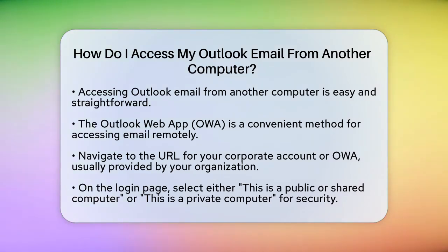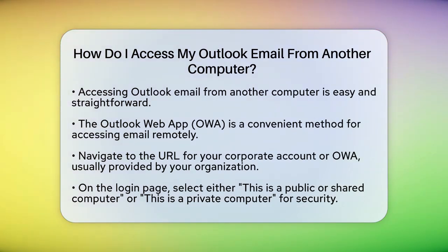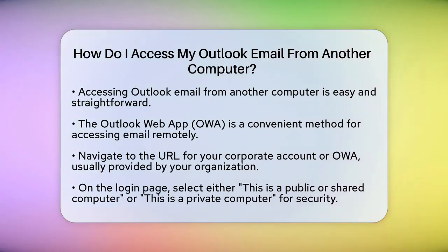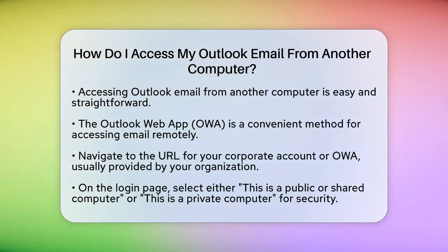First, you need to know that Outlook offers a few different ways to access your email from another computer. One of the most convenient methods is using the Outlook Web App, also known as Outlook Web Access, or OWA. To start, navigate to the URL for your corporate account or your Outlook Web App. This URL is usually provided by your organization or can be found in your Outlook settings.